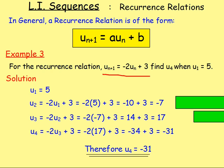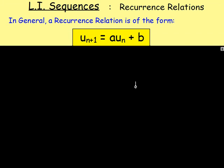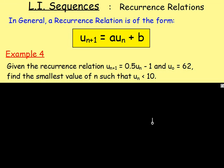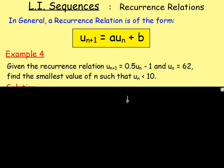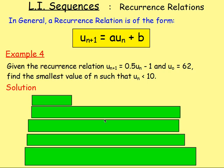Let's try one last example of that then. So example number 4. Given the recurrence relation, UN plus 1 equals 0.5 UN minus 1. And U0 equals 62. Find the smallest value of n such that Un is less than 10. So we want to keep on going and find the first term, the second term, and so on, until we get some number that's less than 10. So to do that, start off with what we're given. We're given U0 equals 62.